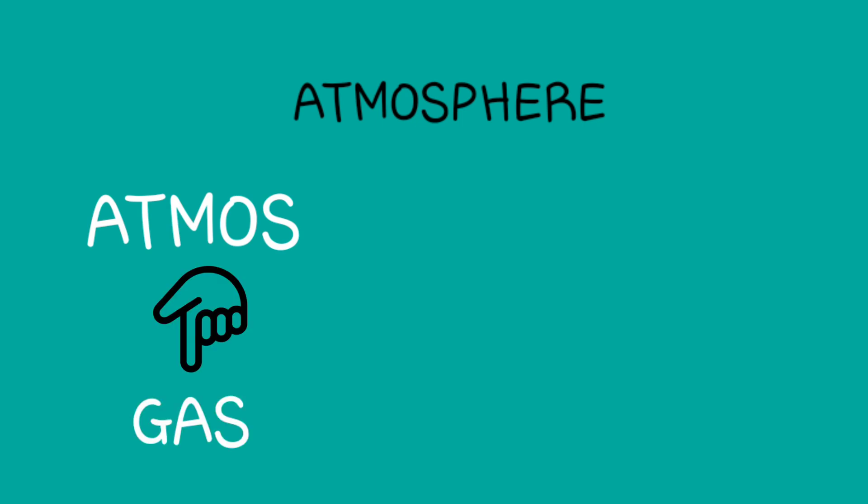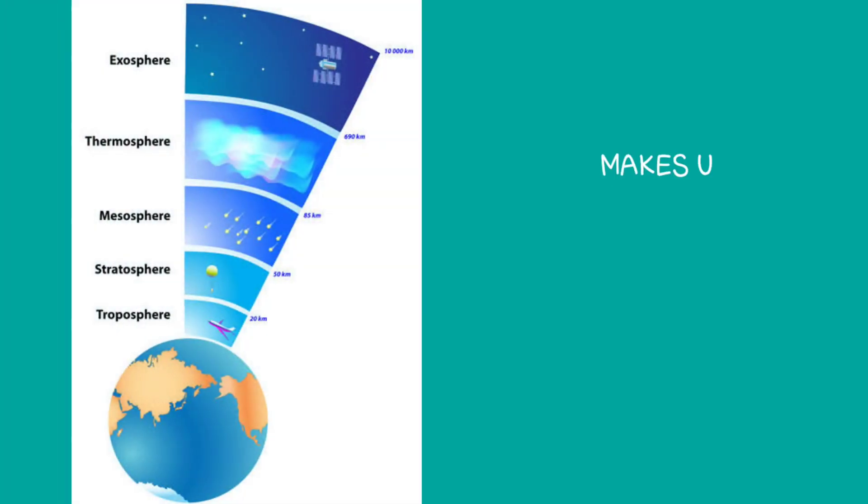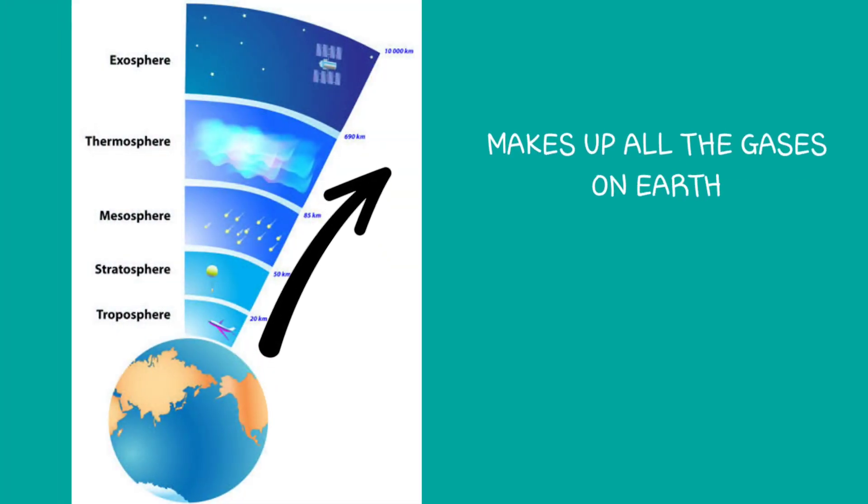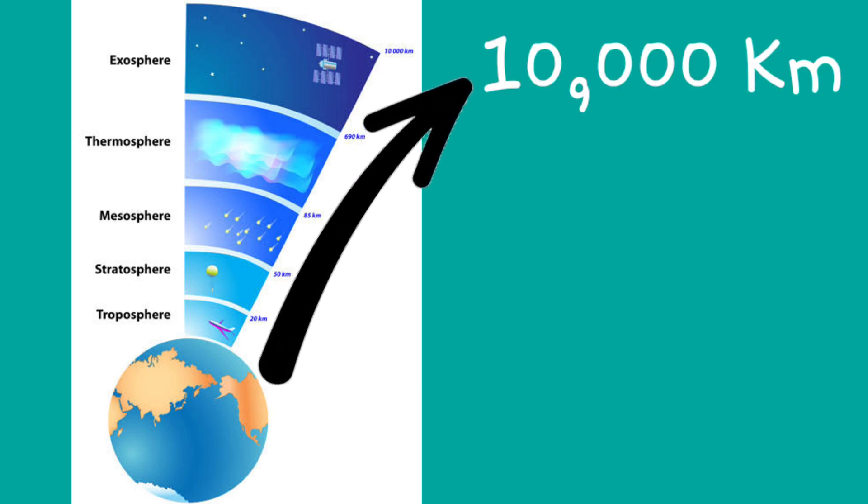The word atmosphere comes from the Greek roots atmos, which means gas, and sphera, which means globe or ball. The atmosphere makes up all the gases on Earth. It extends outward about 10,000 kilometers from the surface of the Earth.